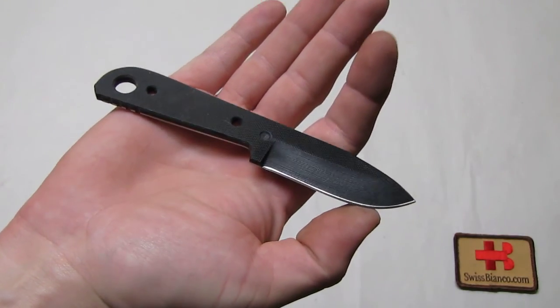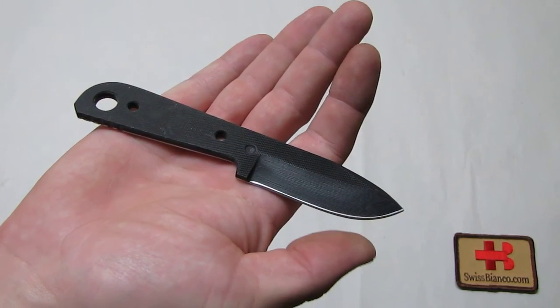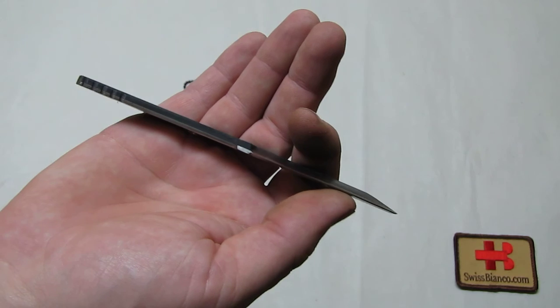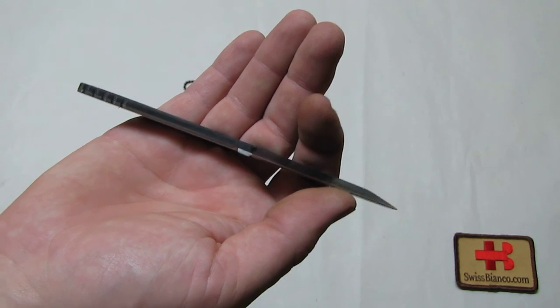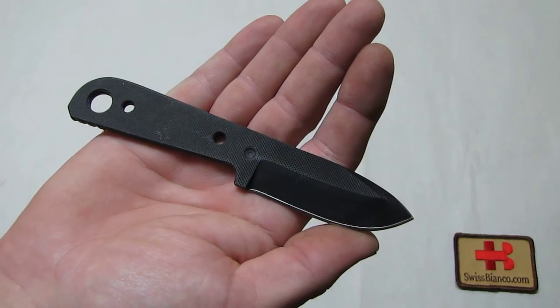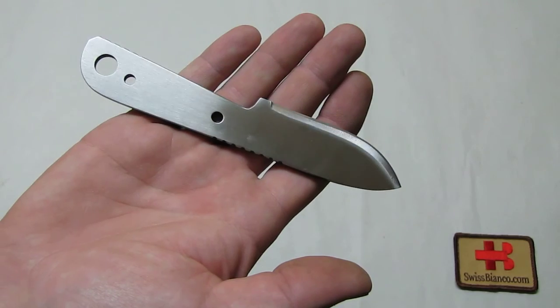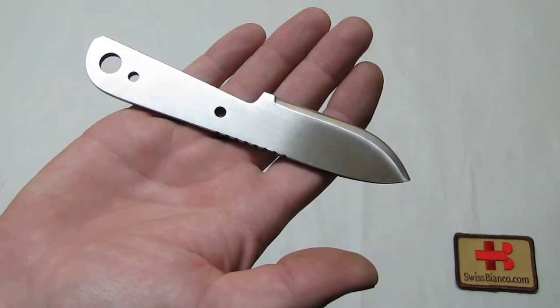It's a Swiss Bianco design and there was a question how to resharpen the laminated construction knife. One side, the black side, is a G10 glass fiber laminate. The other side, the silver side, is a 440C stainless steel.